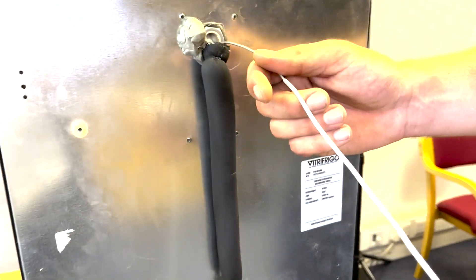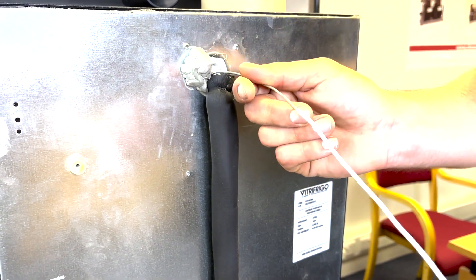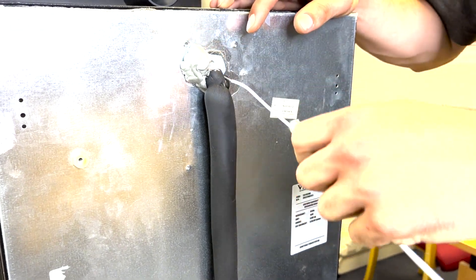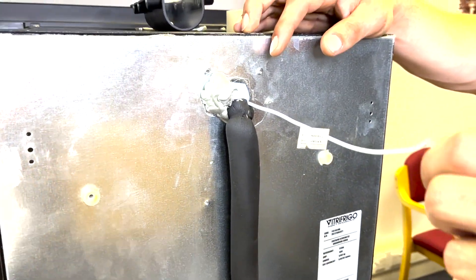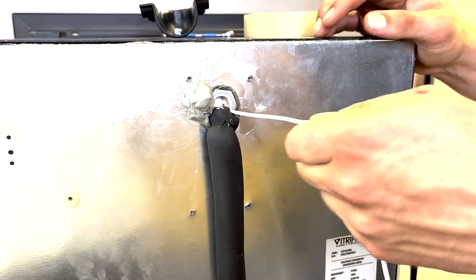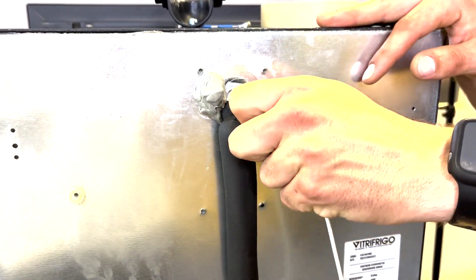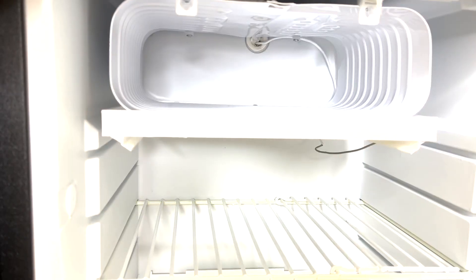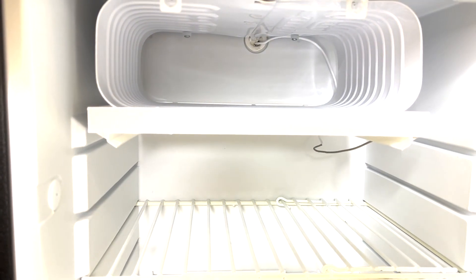Then insert the new thermostat probe into the back of the fridge. The probe is hollow and filled with refrigerant so do not cut it shorter and be careful not to kink or snap it. Put some tape on the new thermostat marking the probe length so that it is the same as the thermostat you removed.